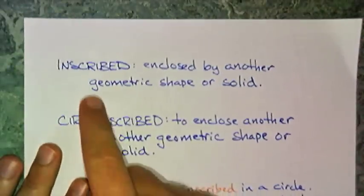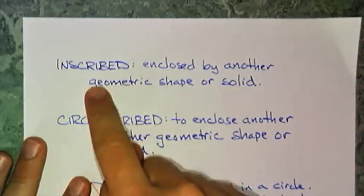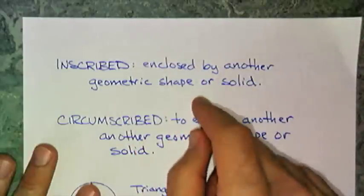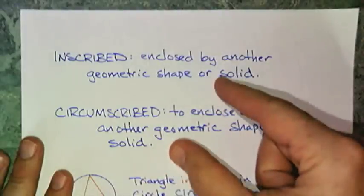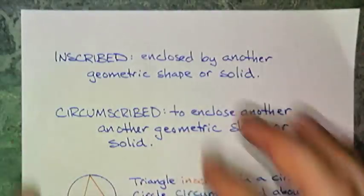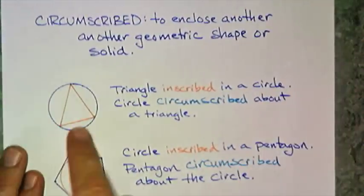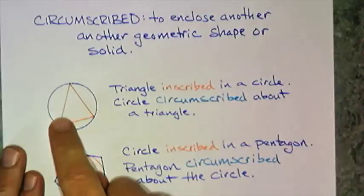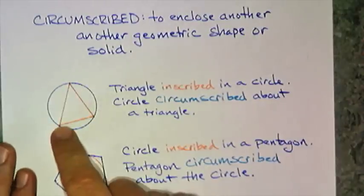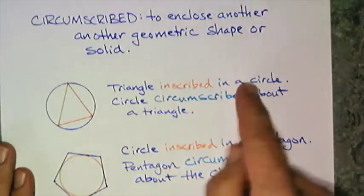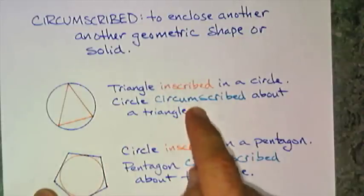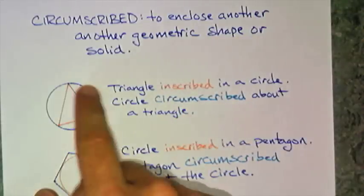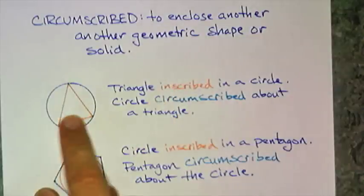Now, onto some words that you may not have heard before. The word inscribed and circumscribed. Inscribed is enclosed by another geometric shape or solid. Circumscribed is to enclose another geometric shape or solid. Very close. Very similar kind of definitions. So let's look at a couple of diagrams. In here, I have a triangle and a circle. Notice that the triangle hits three points on the circumference, and we're going to say the triangle is inscribed in a circle. Likewise, I could say it the other way, saying a circle is circumscribed about a triangle.